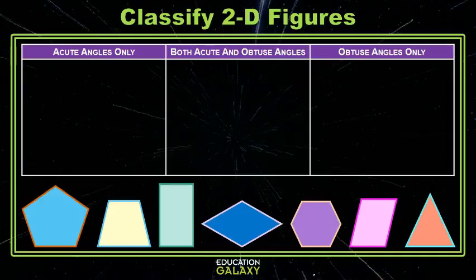Here we'll be grouping things based on angle similarities, comparing acute angles to obtuse angles. Remember that acute are smaller than a right angle, smaller than 90 degrees. Obtuse angles are larger than 90 degrees.